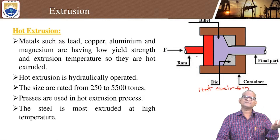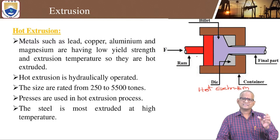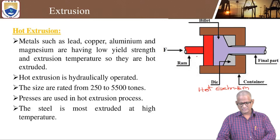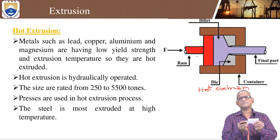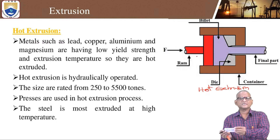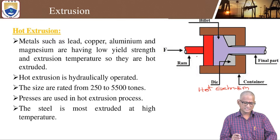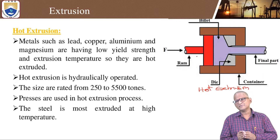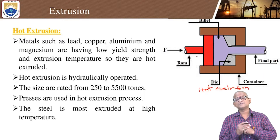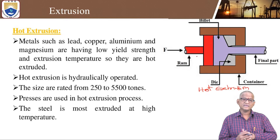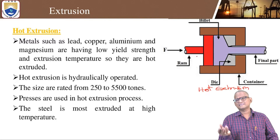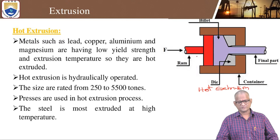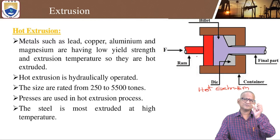Compared to the casting process, which has a lot of wastage and scrap, in metal forming or mechanical forming processes, wastage of material is negligible. Due to plastic deformation, the mechanical properties can be enhanced — tensile strength, compressive strength, and impact strength are all improved. This is the basic definition of extrusion.